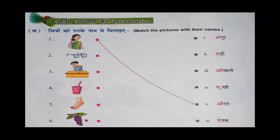See here. First one: ka chitron ko unke naam se mila aiyye — match the pictures with their names. So picture name, for example, they have given here: first one, aurat picture is there, and that is matched with the word aurat. Example they have done.